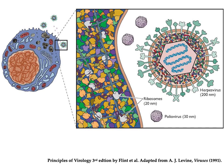A different way to imagine how small they are is to think of a diagram of a human cell. The internal contents of this cell are drawn to scale in the blow-up on the right. You can see lots of gray ribosomes, the sites of protein synthesis. These are about 20 nanometers in diameter. Most viruses aren't too much larger than a ribosome, but you can see that some viruses, like herpesvirus, are a lot larger.